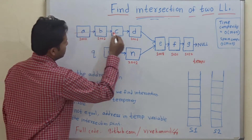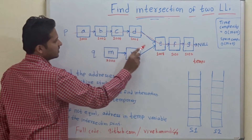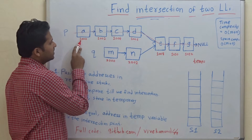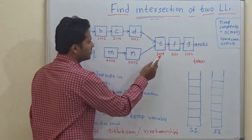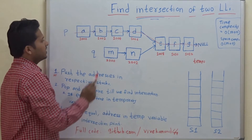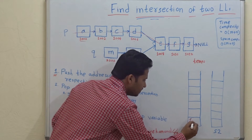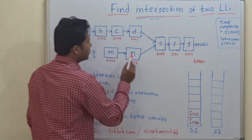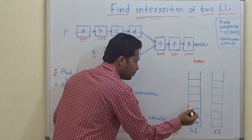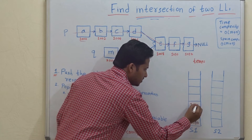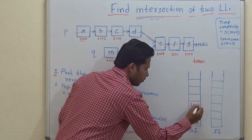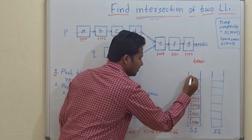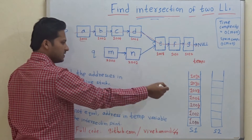This is the first linked list and we will push all the addresses of this linked list into stack one. The first address is 1000, then 1002, 1004, 1006, 1008, 1010, and 1012. So we have pushed all the addresses into stack one.